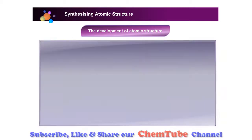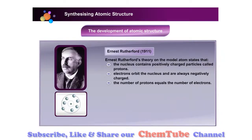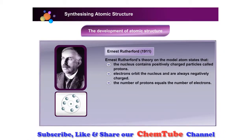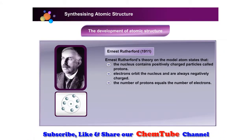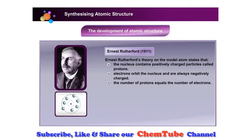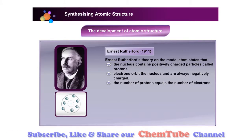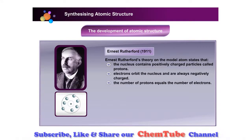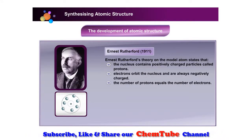Ernest Rutherford's theory on the atomic model states that the nucleus contains positively charged particles called protons. Electrons orbit the nucleus and are always negatively charged. The number of protons equals the number of electrons.